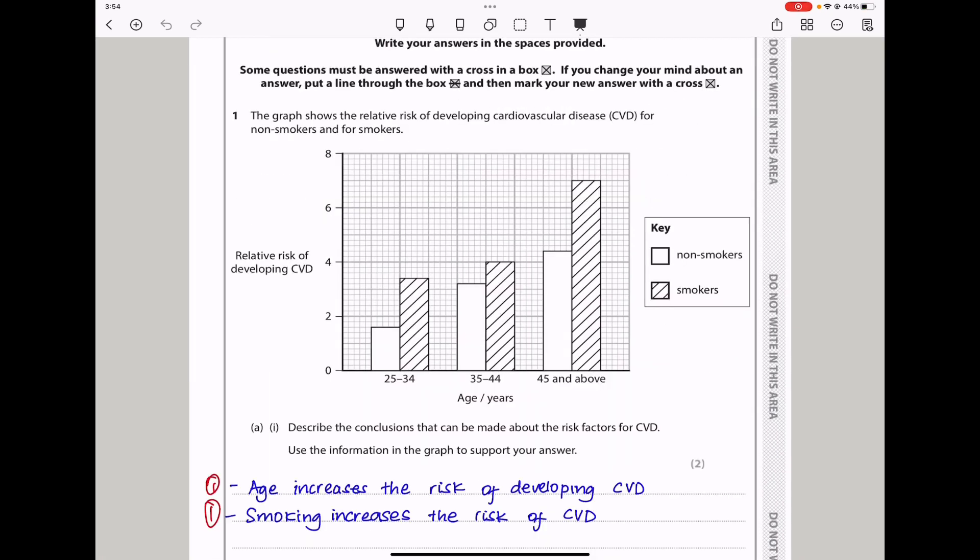Question 1 says the graph shows the relative risk of developing cardiovascular disease (CVD) for non-smokers and for smokers. On the vertical axis, we have relative risk of developing CVD, and on the horizontal axis, we have age in years. We see data among those between 25 to 34, between 35 to 44, and 44 and above.